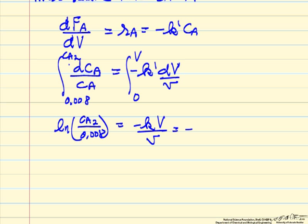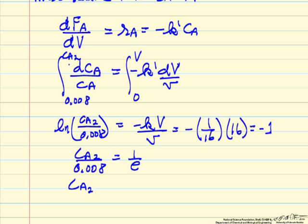So K prime over V is 1 over 16. Plug flow reactor volume, 16 liters. So this is minus 1. And so the concentration leaving the system for A.